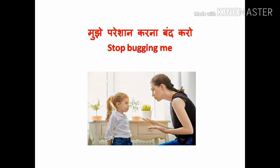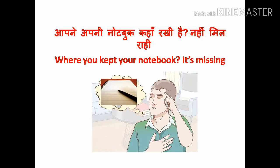मुझे परेशान करना बंद करो — Stop bugging me. 'Bugging' means to bother or disturb, so it's a very sweet word. Whenever your children bother you, you can tell them 'Stop bugging me.' Next, when you are asking your child where they have kept their book — it's not to be found. Children often misplace things, so we ask questions like this. You can use whatever object is missing to form the sentence.